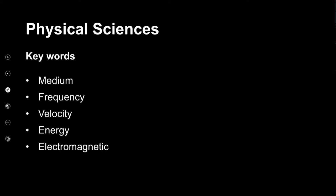Before we begin, let's have a look at some key words to make sure we are familiar with them. The first word is medium — one you should be familiar with from your previous work in waves, and not one you should confuse with the type of steak that you buy at your local spur. The medium in physics is the substance through which a wave passes; it is the substance through which the energy is transferred.